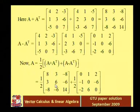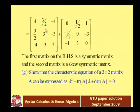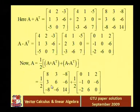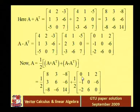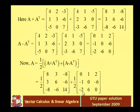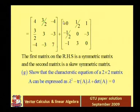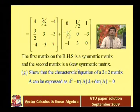Dividing by 2: the first (symmetric) matrix becomes 4, 3/2, minus 4 / 3/2, 3, minus 3 / minus 4, minus 3, 7. And the second (skew symmetric) matrix becomes 0, 1/2, 1 / minus 1/2, 0, minus 3 / minus 1, 3, 0. The first matrix on the RHS is the symmetric matrix and the second matrix on the RHS is the skew symmetric matrix, completing the solution.